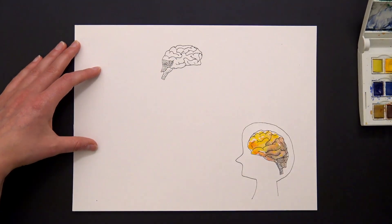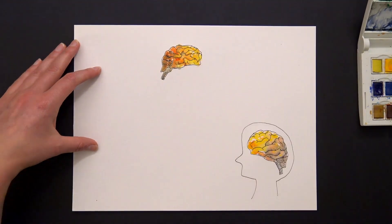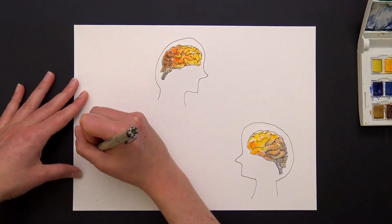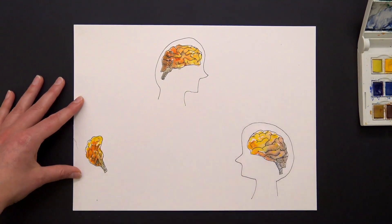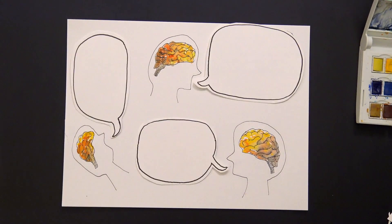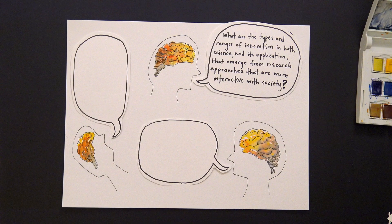Learning more about innovation in this context requires many different kinds of scientists and scholars working together with users, funders, and beneficiaries of science, and asking lots of questions like: What are the types and ranges of innovation in both science and its application that emerge from research approaches that are more interactive with society?